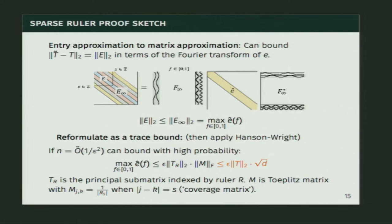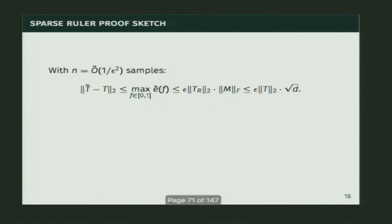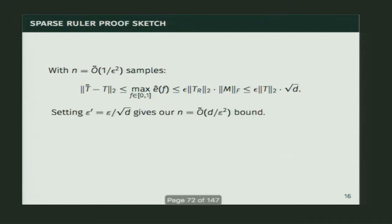We can bound this quantity by epsilon times the spectral norm of the full T — since T_R is a submatrix — times the Frobenius norm of M, which is at most sqrt(d) since every entry is at most 1. So with 1/epsilon^2 samples, the error is epsilon times the spectral norm times sqrt(d). Setting epsilon' = epsilon / sqrt(d), we get the d / epsilon^2 bound for vector sample complexity, recovering what the independence intuition suggested.